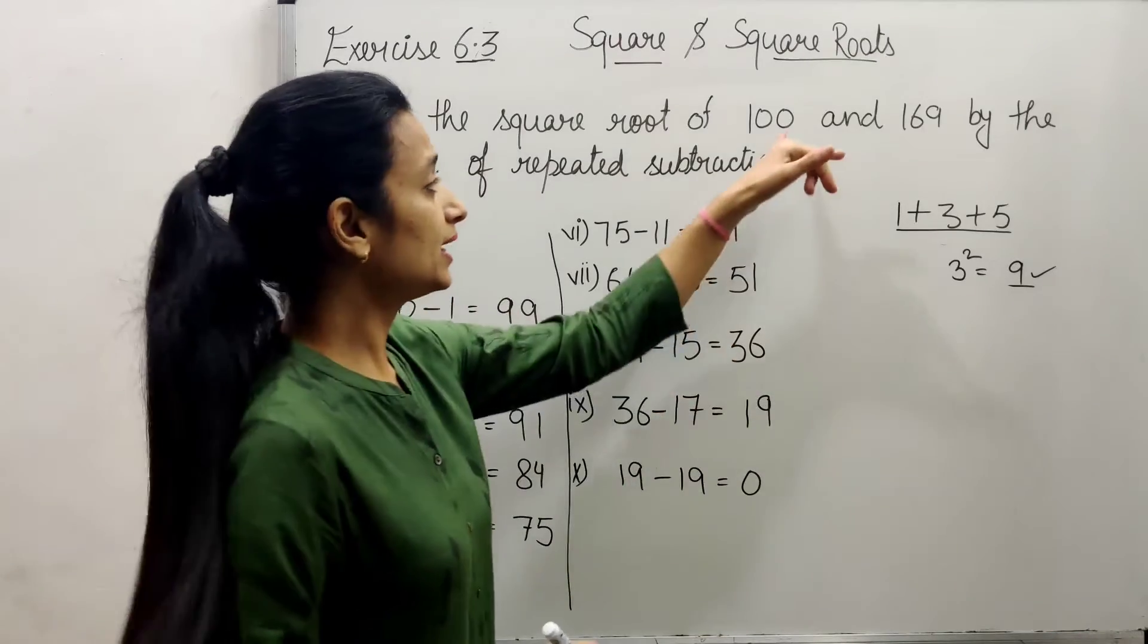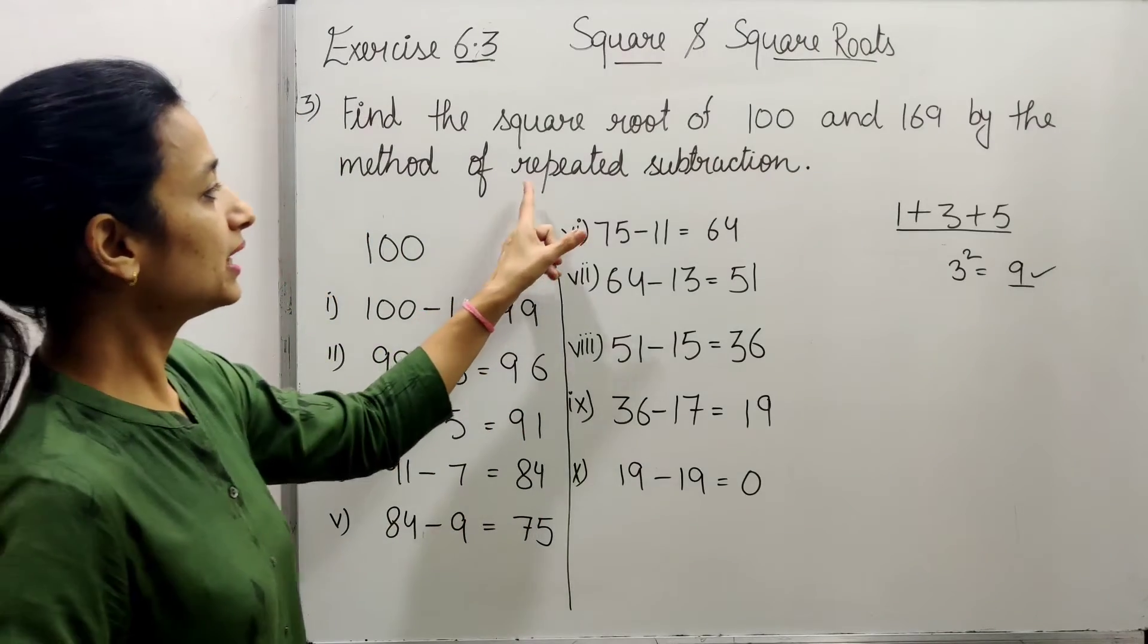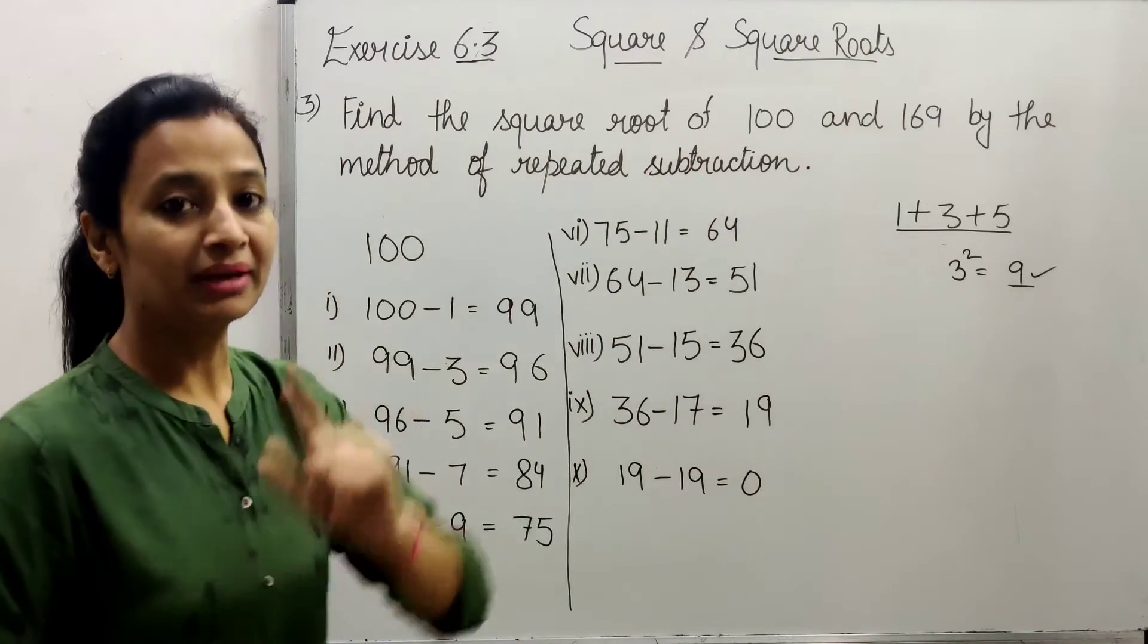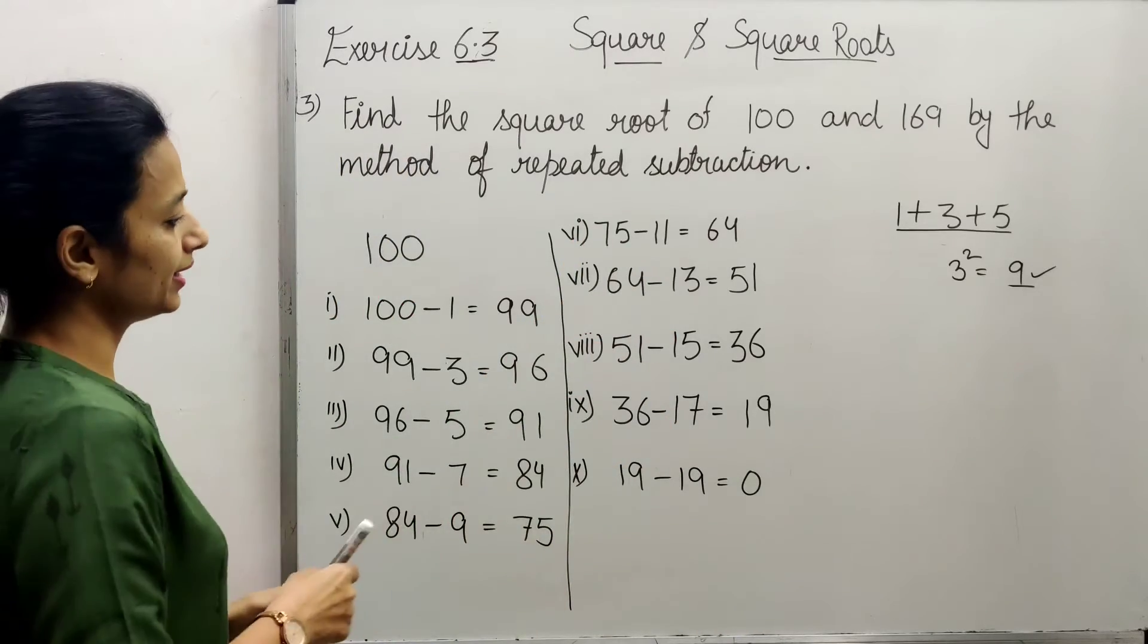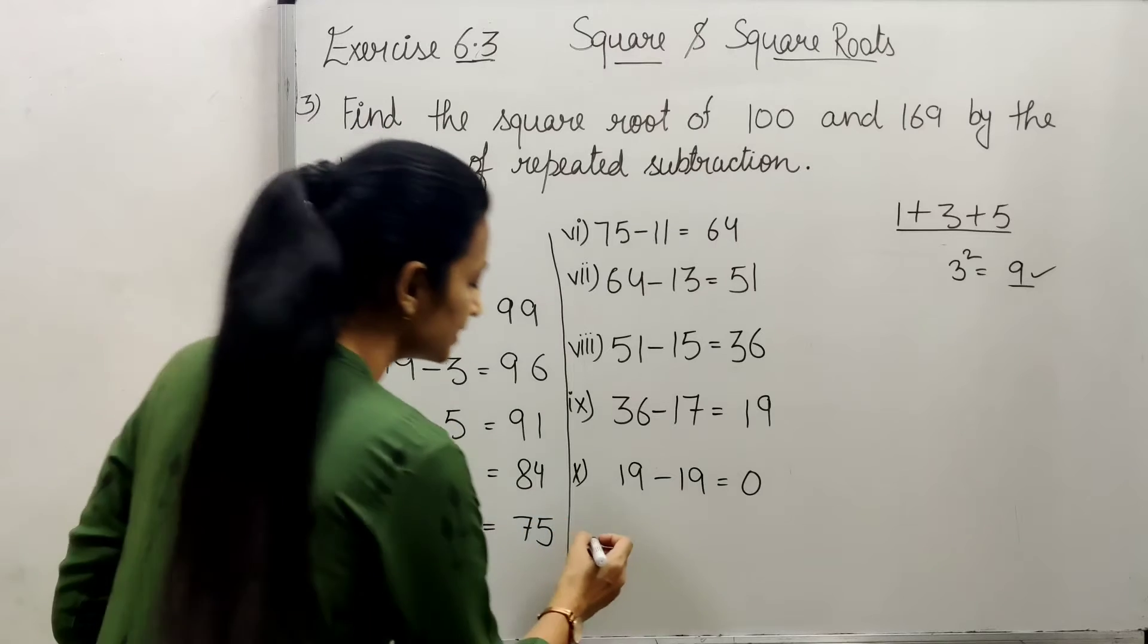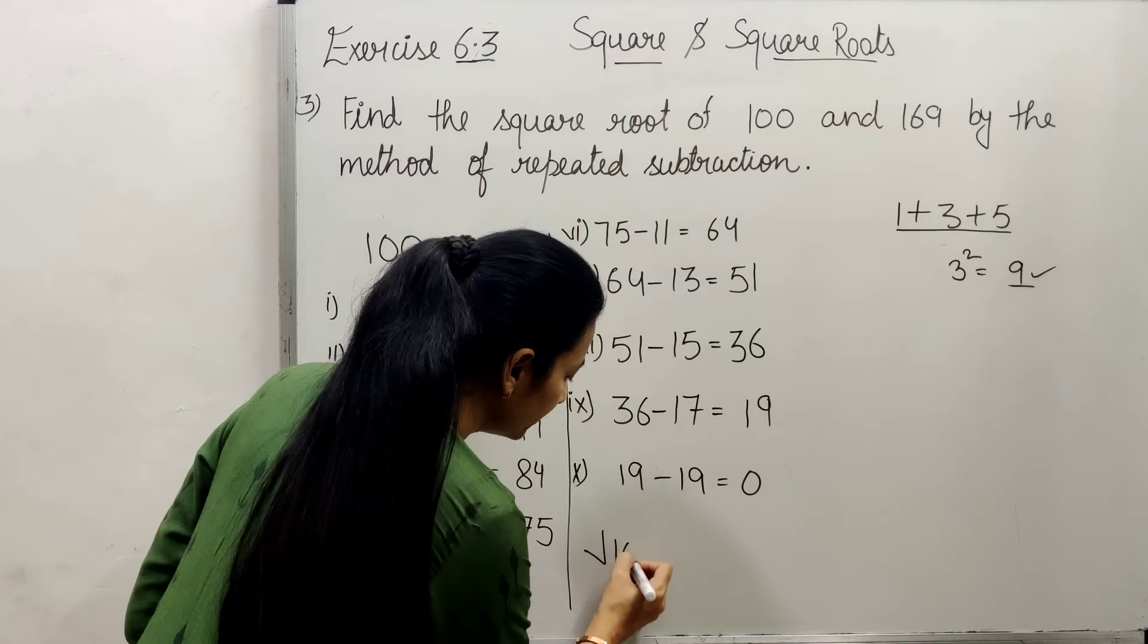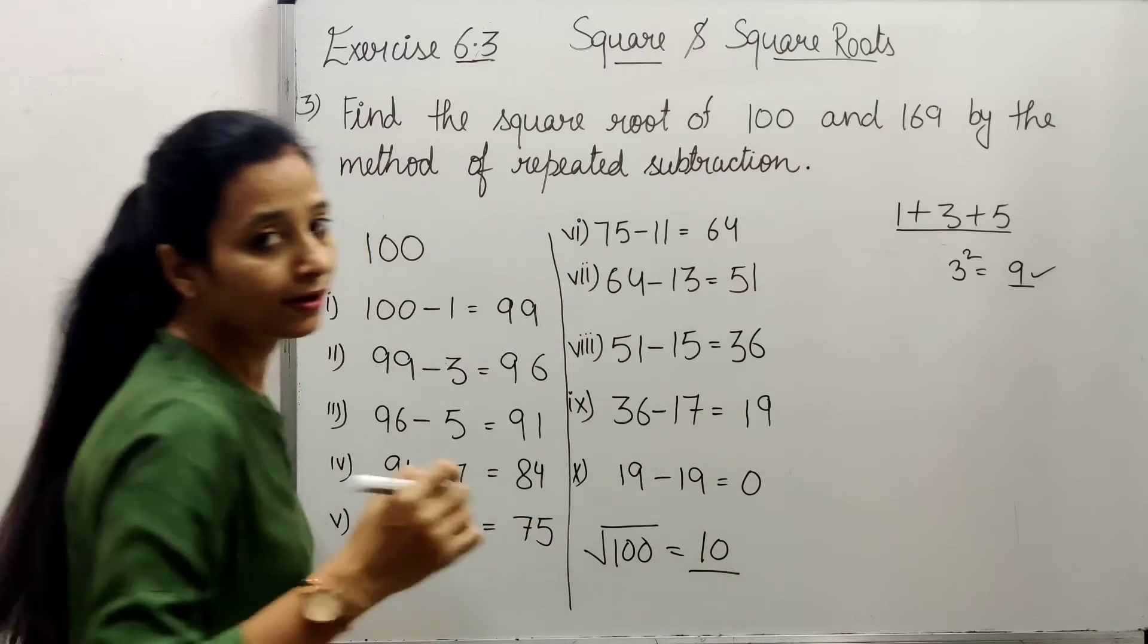We also know that the square root of 100 is 10, but because we have to use the repeated subtraction method, we will do this. The answer will be the total number of steps from start to zero, which is 10 steps. So the square root of 100 is 10.